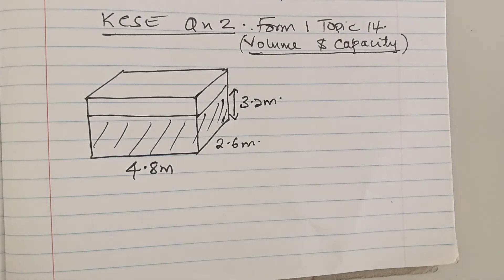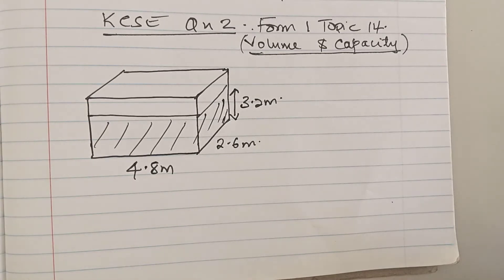find the volume of water in liters that is in the tank. Now we know very well that the dimensions given to us will give us the volume of the water that is in the tank. Remember, what we are looking for is the volume of the water in the tank and not the capacity of the tank.